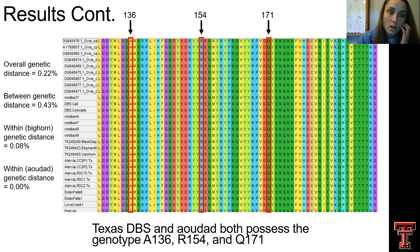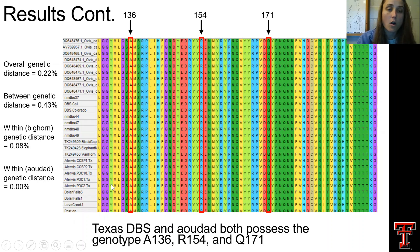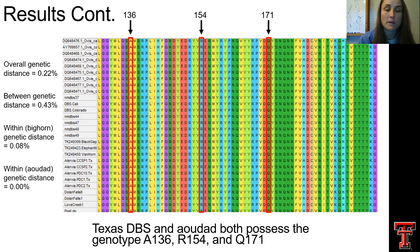Between the two putative subspecies of Aoudad as well as bighorn sheep, we wanted to compare the prion protein gene to determine the level of susceptibility as well as to see if there are any differences in variation. While we didn't see any variation, all Aoudad and bighorn sheep have a genotype of alanine at codon 136, arginine at codon 154, and glutamine at codon 171 — meaning that a genotype of A136, R154, and Q171 is indicative of moderate susceptibility to scrapie based on studies performed with domestic sheep and goats.